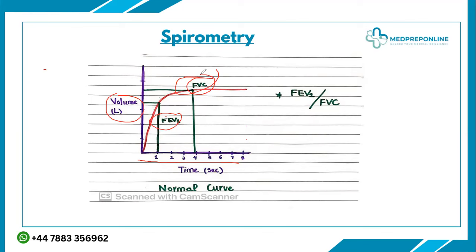Think of it this way: if I take a forced expiration and exhale completely, the total volume I exhale is my forced vital capacity (FVC). But what I exhaled in just the first one second of that forced exhalation — that is my forced expiratory volume at one second (FEV1). The total exhalation typically takes about four seconds, and that total amount is the FVC.